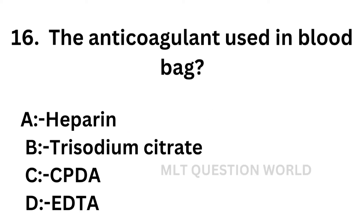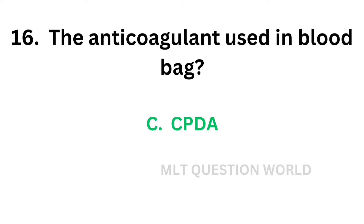Question number 16: The anticoagulant used in blood bag — option A: Heparin, option B: Trisodium citrate, option C: CPDA, option D: EDTA. The correct answer is option C, CPDA — Citrate Phosphate Dextrose Adenine. The anticoagulant used in blood bag is CPDA.